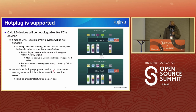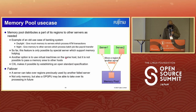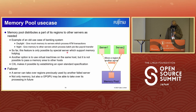Not only replacing a physical device, but you can also add a memory area hot-removed from another server. This will be an important feature for memory pool. A memory pool use case is that the pool distributes parts of its regions to servers as needed. An example is a banking system: in daytime it gives more memory to servers handling ATM transactions; at night it gives memory to servers processing batch jobs like payroll transfers. So far this was only possible with special servers supporting memory hot plug, or using a virtual machine on the same host — but that cannot pass memory to other hosts. CXL makes it possible via an open standard specification.